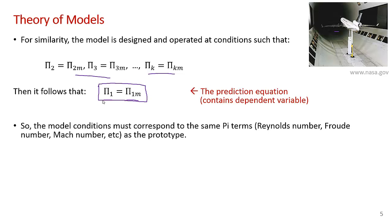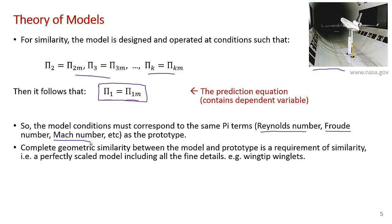The model conditions must correspond to the same pi terms as the prototype. For example, a small-scale aircraft in a wind tunnel would be run at the same Reynolds number as the full-scale aircraft. If it was a boat being towed in a water tank, you'd tow it at the same Froude number as the full-scale boat. And if it was a high-speed aerodynamics problem like launching a rocket, you'd run the wind tunnel at the same Mach number as expected for the full-scale rocket. If you manage to do that, the pi 1s will be the same, and you can set pi 1 of the model equal to pi 1 for the full-scale prototype.